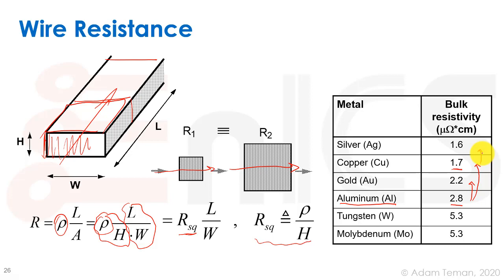Today, new materials such as Ru are being explored, which can give good resistivity without needing barrier layers like copper requires — barrier layers that actually hurt the effective resistivity.